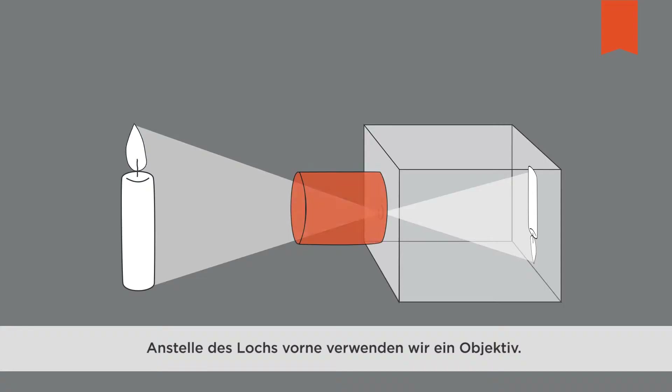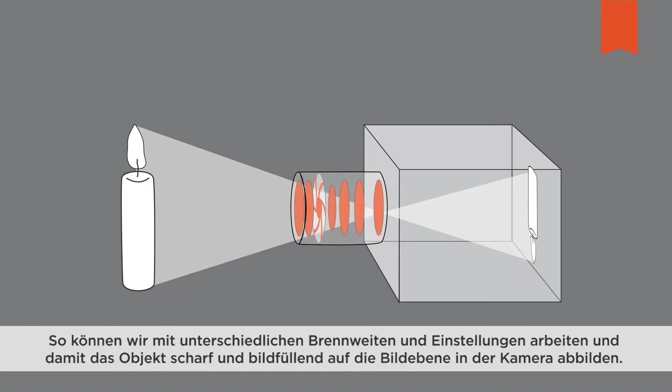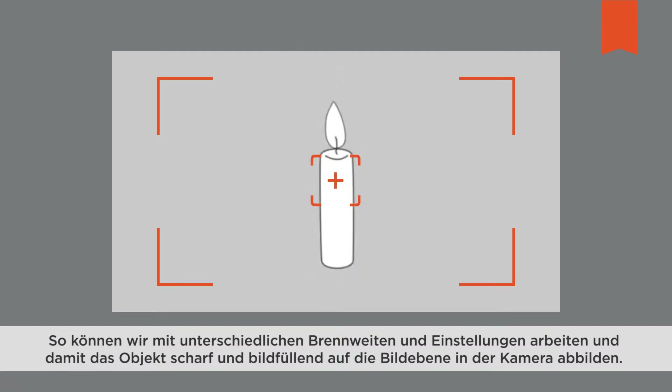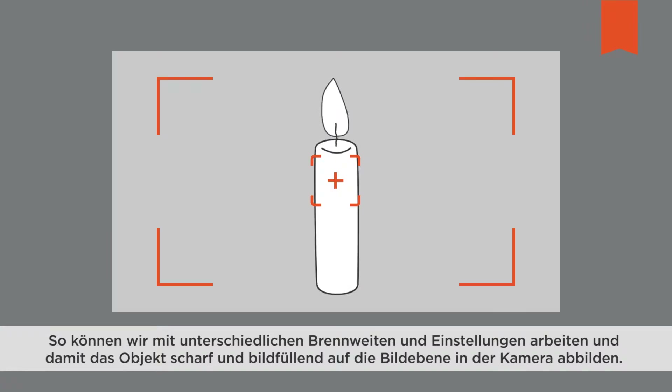Over the course of time, our black box has undergone a massive transformation, not least through the components that are now used. Instead of the pinhole, we use a lens, which allows us to keep the object in focus and prominent at the image level within the camera, despite working with different focal lengths and settings.